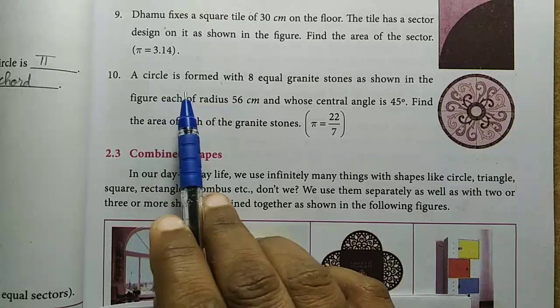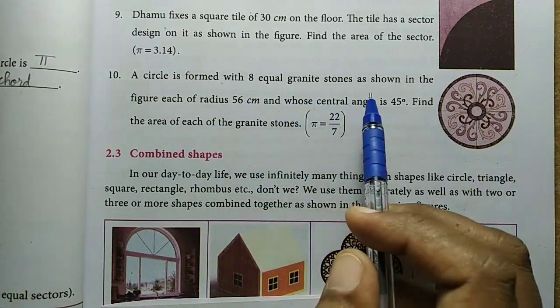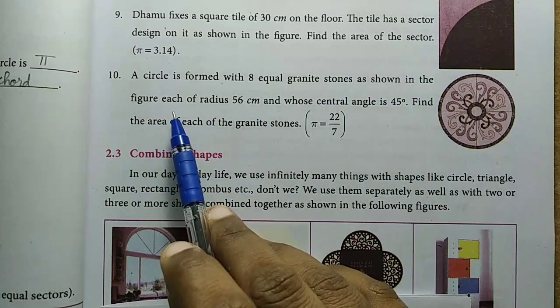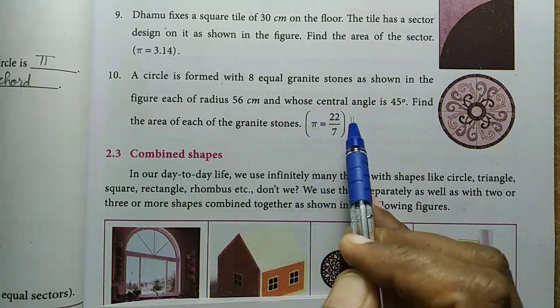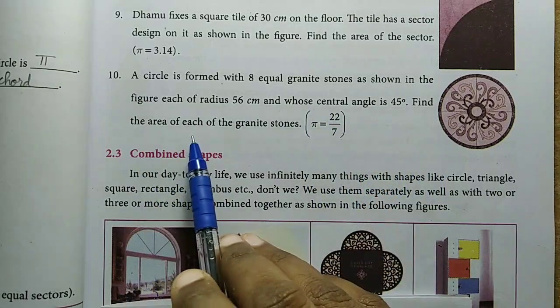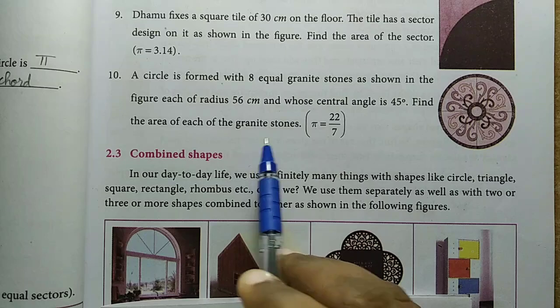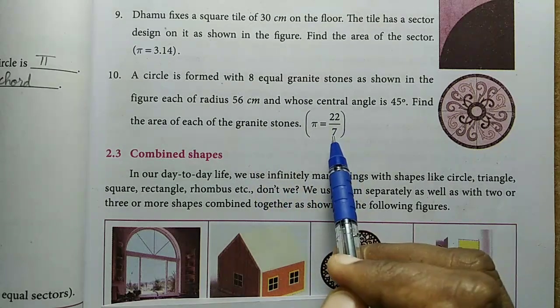A circle is formed with 8 equal granite stones as shown in the figure, each of radius 56 cm and whose central angle is 45 degrees. Find the area of each of the granite stones. So here, pi is equal to 22 divided by 7.